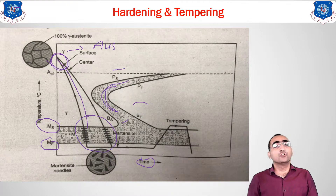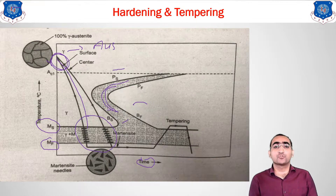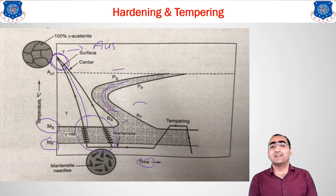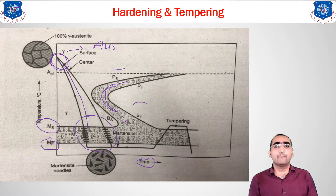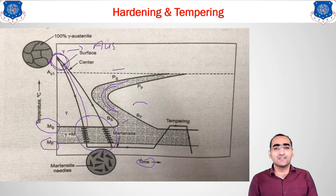This was the third method — hardening. In this lecture we have discussed three methods: annealing, normalizing, and hardening — three types of bulk heat treatment methods. The remaining fourth method, tempering, and its types, we will be discussing in our upcoming lecture. Thank you.